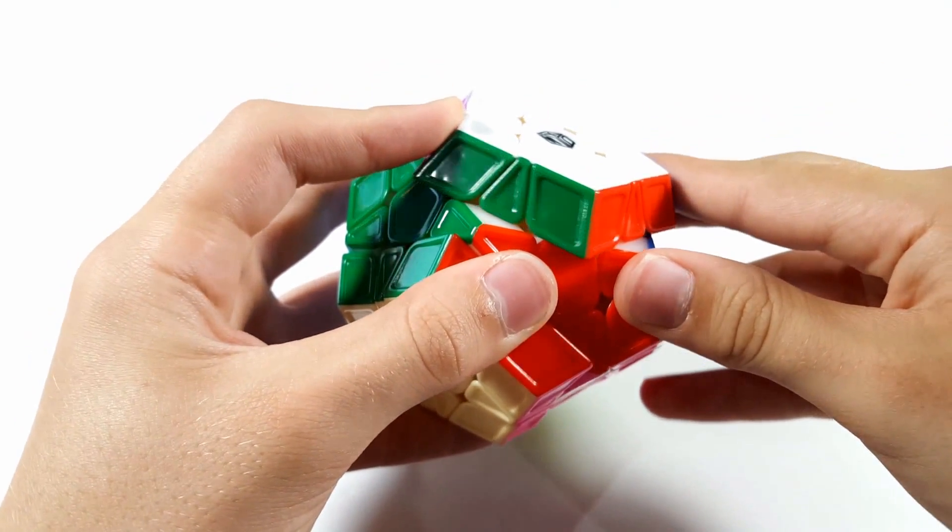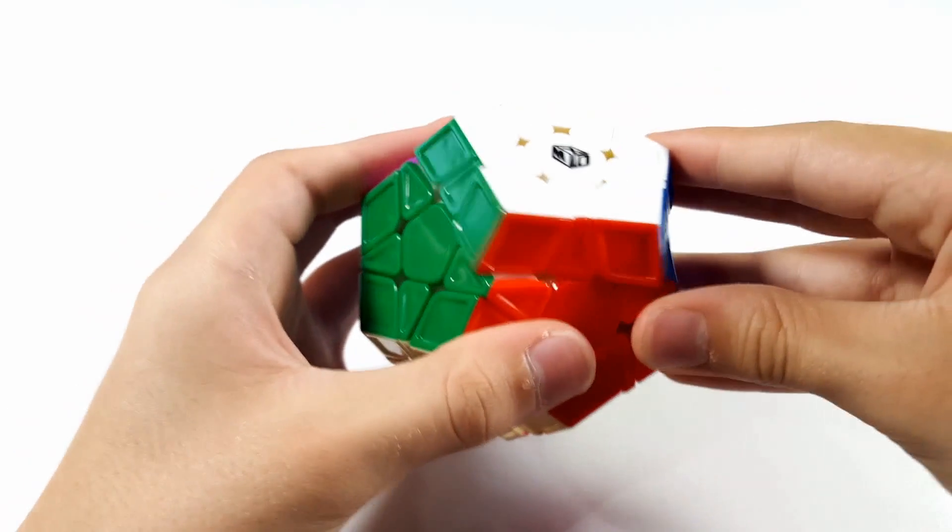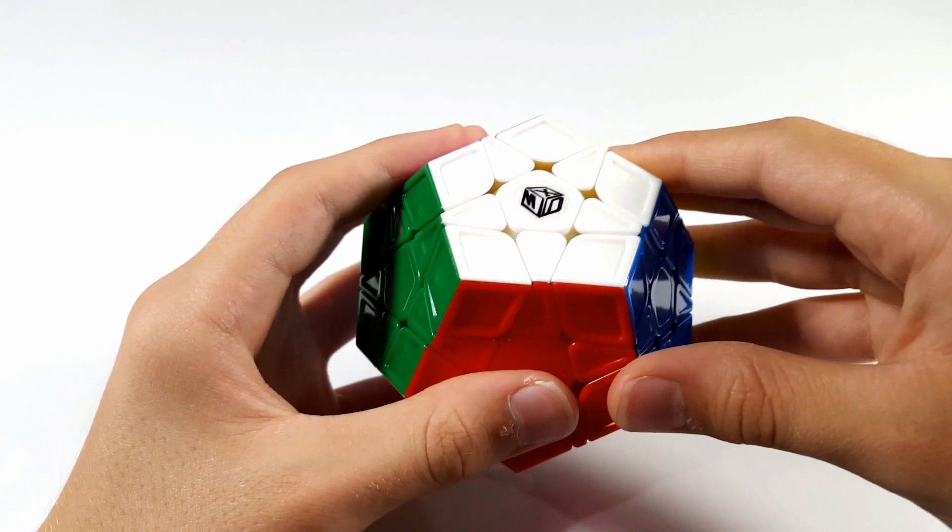As for the corner cutting, the cube can actually cut almost anywhere with ease and even reverse cuts quite a bit. For a Megaminx, this is really amazing and is a real plus for this cube.